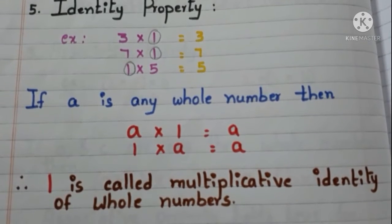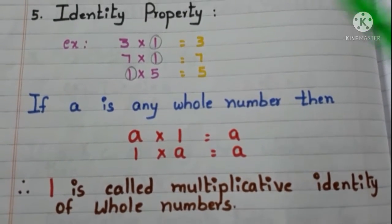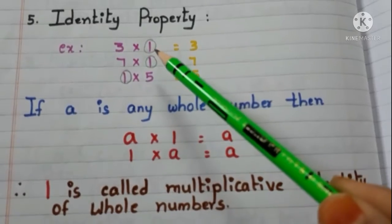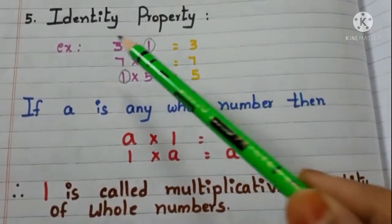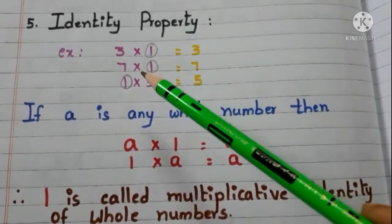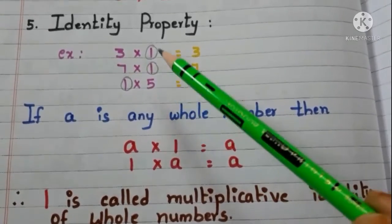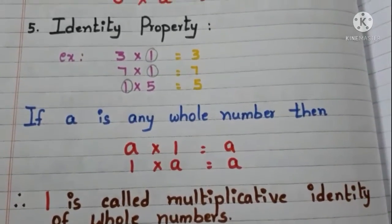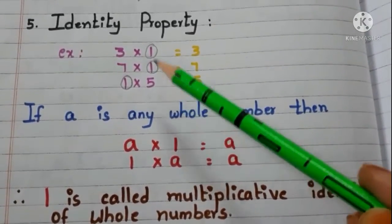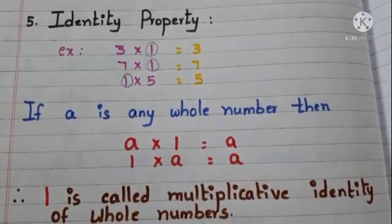Now, identity property. Let us see with the example. Take a whole number 3 and multiply with 1. 3 times 1 are 3. Now, take a whole number 7 and multiply with 1. 7 times 1 are 7. Now, take a whole number 5 and multiply with 1. 1 times 5 is 5.